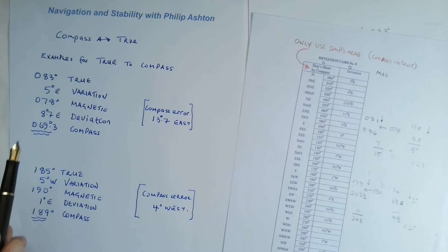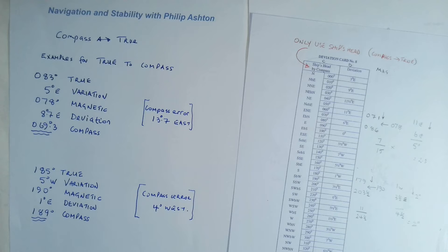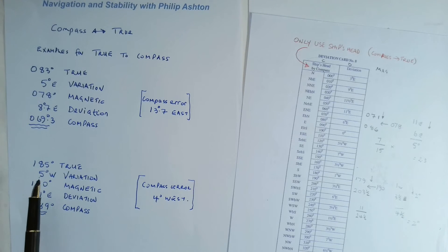And of course the two together combined give our compass error. Another example: 185 true, 5 west variation.